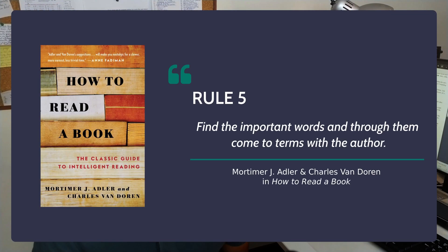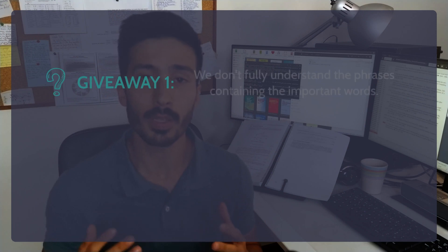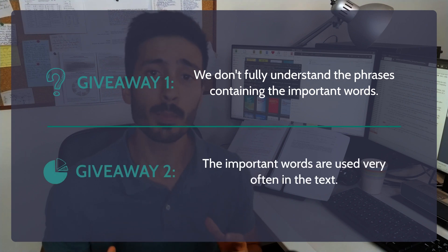A good place to find some clarification is Mortimer J. Adler's and Charles Van Doren's book How to Read a Book. According to their rule 5: find the important words and through them come to terms with the author. Our task has two parts: first, find the words corresponding to the main concepts, and second, understand what the author means by them. There are two main giveaways — when you read a sentence using these words and don't fully understand it, and when the word comes up very often in the text. Highlight these words; these are your targets for understanding.